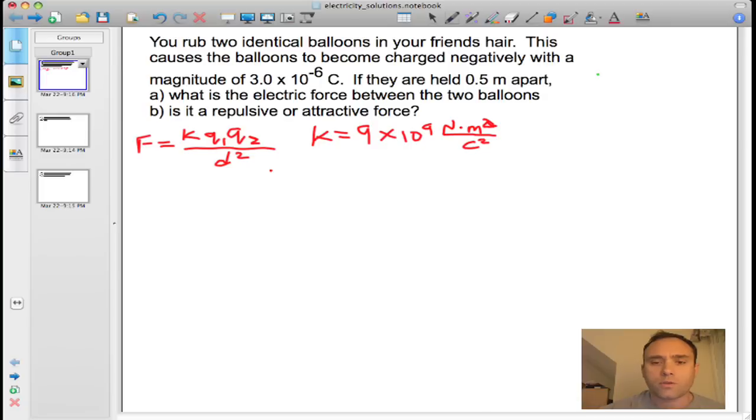It says that two balloons are identically charged, so that means q1 and q2 are actually the same thing. So q1 and q2 are both equal to 3.0 times 10 to the negative 6 coulombs. The distance that they're being held apart is 0.5 meters. Okay, so that's the variable definitions.